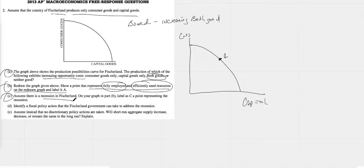Assume there is a recession in Fisherland. On your graph in part B, label C representing the recession. Recessions are always shown as inside the curve. We have what we call idle resources, and those idle resources are people. People are unemployed. Obviously, recessions are the points inside the curve. We're supposed to label it C, so C.